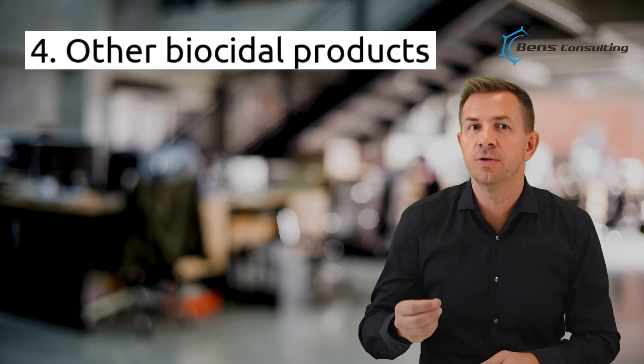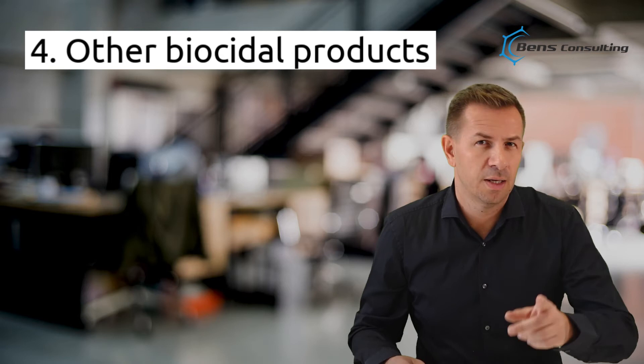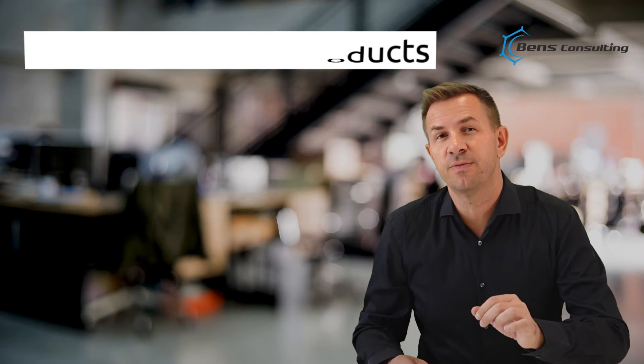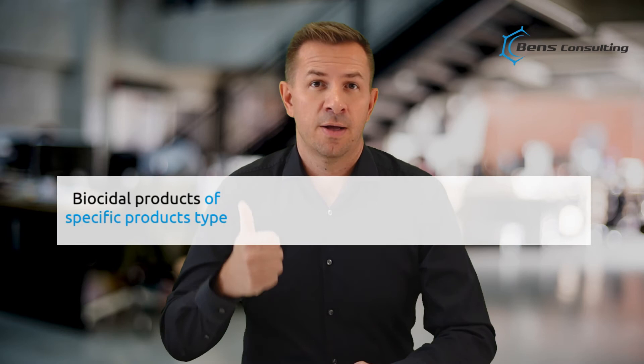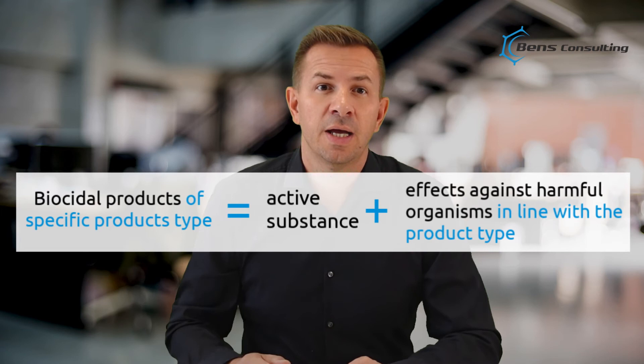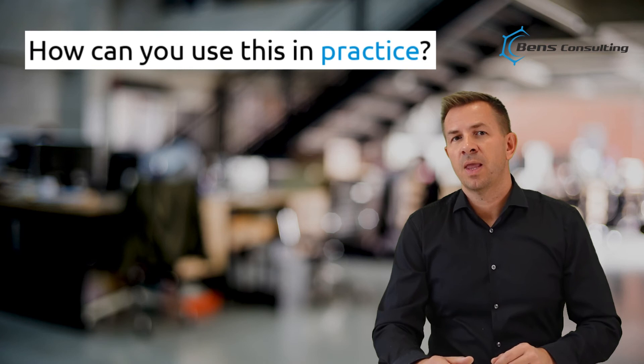The last group is titled 'other biocidal products' and it includes anti-fouling products and embalming liquids. Embalming liquids are fluids used for the disinfection and preservation of human and animal corpses or parts thereof. Now we can update our formula: a biocidal product of a specific product type is a product that contains an active substance and has claims that are in line with product type specifications.